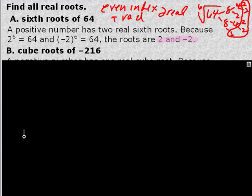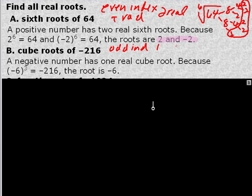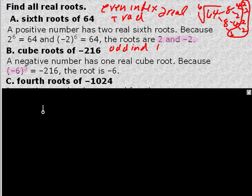Cube root of negative 16: using our rules, it's an odd index, so there's going to be one real root. What do we multiply together three times to get to 16? It's going to be negative something. Fourth root of negative 1024: we have an even index and a negative radicand, which means there are no real roots.